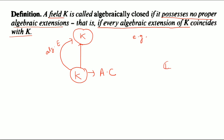For example, if you have the field C (complex numbers) and you find an algebraic extension, it will become C itself. So this type of field we call algebraically closed. This is how we explain that C is algebraically closed — if any algebraic extension you find coincides with the field itself.